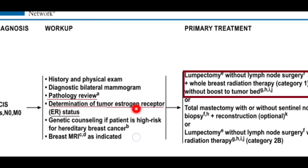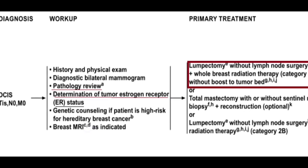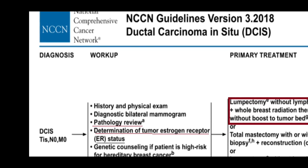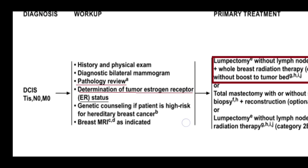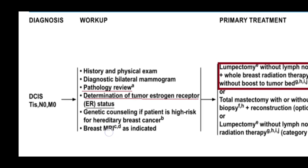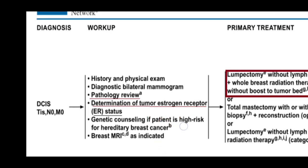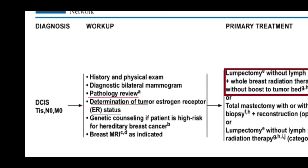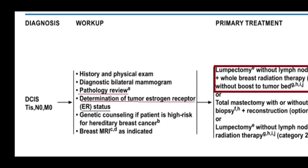Determination of tumor estrogen receptors is important; immunohistochemistry for DCIS includes ER only — there is no benefit for HER2 receptor testing. We also need to do genetic counseling if the patient is high risk, such as having a family member with breast cancer or being young, to detect gene mutations like BRCA1 and BRCA2. Breast MRI is indicated in certain specific situations regarding breast cancer, which will be discussed in further lectures.